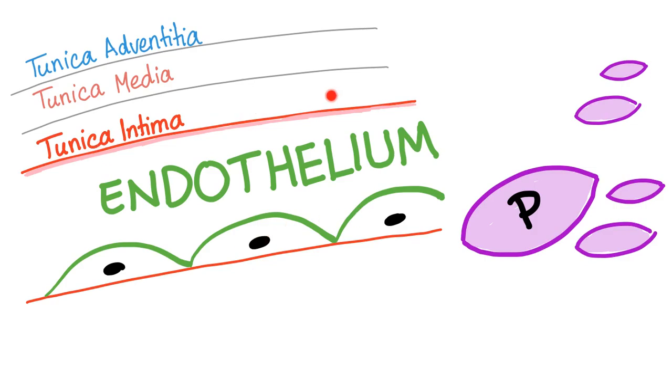As you know, your blood vessel wall has three layers: tunica intima, tunica media, and tunica adventitia.